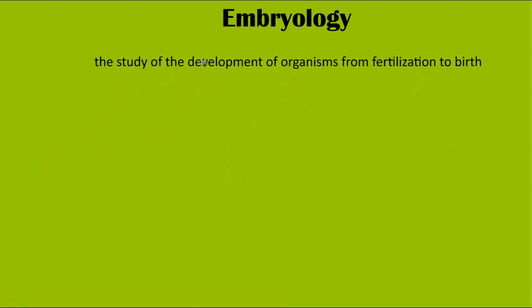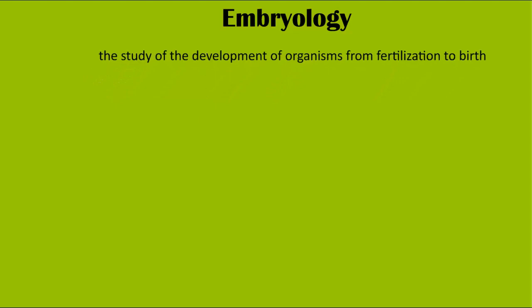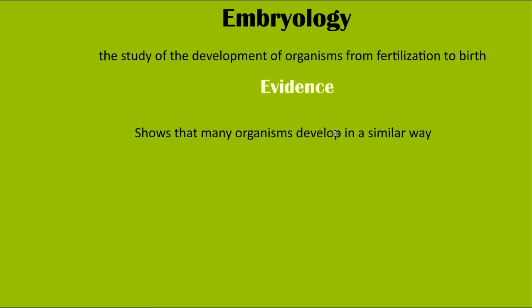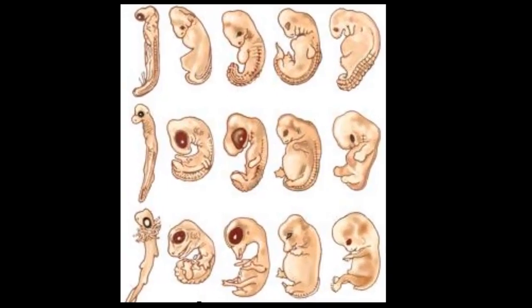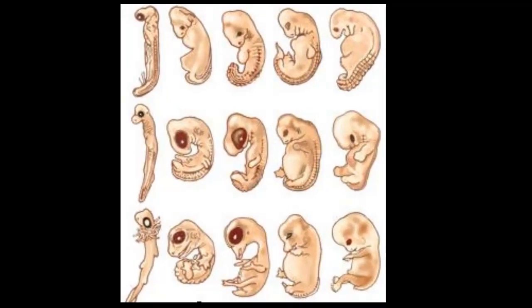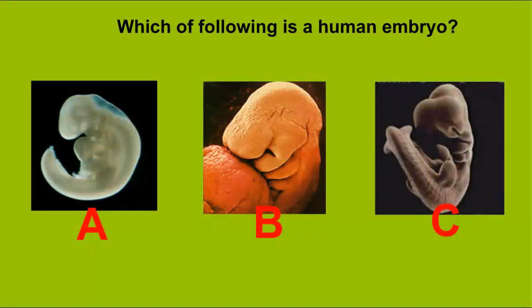Embryology is the study of the development of organisms from fertilization to birth — how things develop once they are conceived. This provides evidence that many different organisms develop in similar fashions. A picture shows five different organisms and how they develop from embryo to fetus, and you can see the similarities in the first few stages, hinting at a connection between these organisms and a common ancestor along the way.